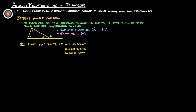Next we have the exterior angle theorem. The measure of the exterior angle is equal to the sum of the two remote interior angles. In plain terms: if you have this triangle with a straight line extending from one side, this exterior angle is going to equal these two interior angles added up. Also, angles 3 and 4 are supplementary — they add up to 180 — so if you know one, you can figure out the other.